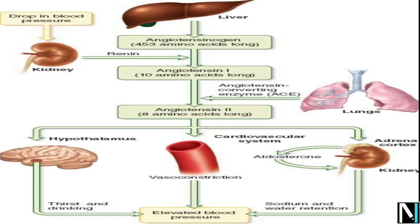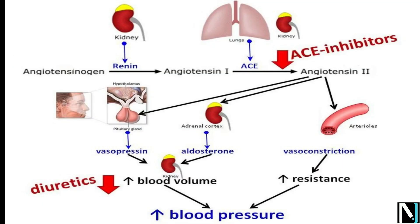JG cells are found at the juxtaglomerular apparatus, which is formed at the junction of the DCT and afferent arteriole. It is made up of three major cells: JG cells (juxtaglomerular cells), macula densa, and lacis. When there is a fall in glomerular blood flow or GFR, these JG cells are activated.